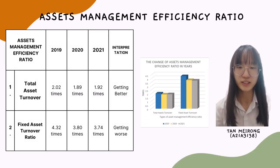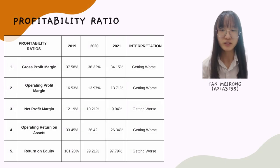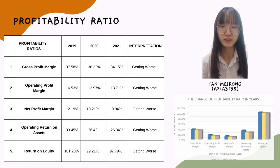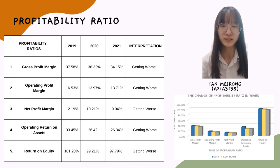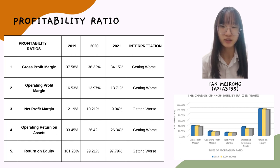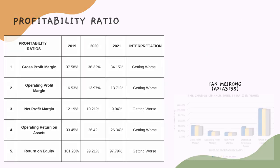For example, the fixed asset turnover of Nestlé Malaysia in 2019 was 4.32 times, decreased to 3.74 times in 2021. Lastly, all the profitability ratios are getting worse. For example, the operating return on assets of Nestlé Malaysia declined from 33.45% to 26.34%, showing that the rate of earnings on total asset investment resulting from operating income is low. That's all for me. Thank you.